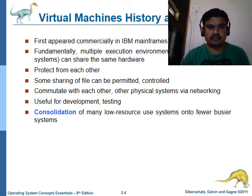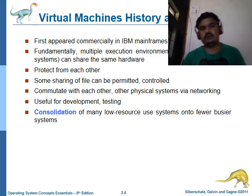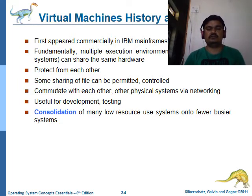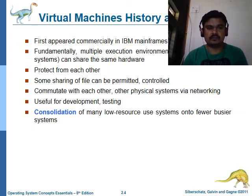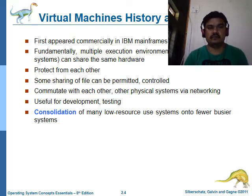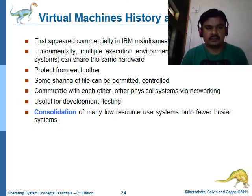Virtual machines first appeared commercially with IBM mainframes in 1972. These mainframes are used fundamentally for multiple execution environments — more than one environment can be imagined on the same machine. These machines share the same hardware. One benefit is that they protect each other: since different operating systems are isolated, a virus affecting one does not affect the others. Some parts of the file system can be shared in a controlled manner, and they communicate using networking.